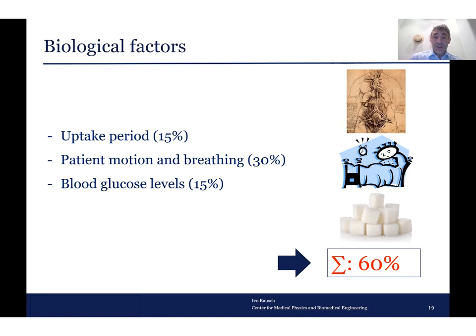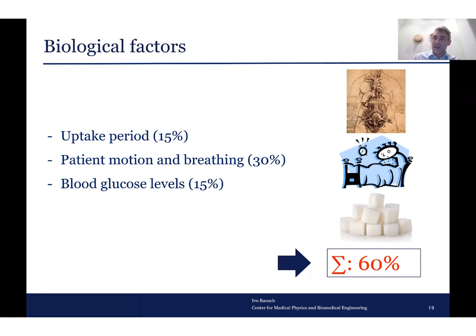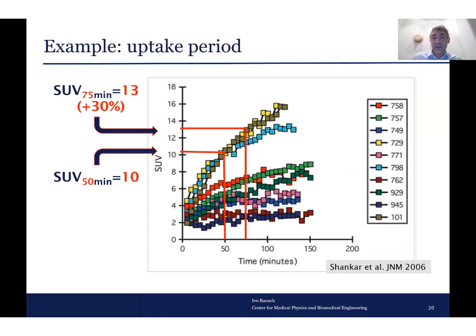Biological factors include the uptake period — the time between injection and measurement — patient motion and breathing, and blood glucose level for FDG. If the patient moves during PET acquisition, it is like smearing the activity over a bigger area, meaning concentration goes down and SUV goes down even though the uptake would be higher. If a patient has a high blood glucose level, their cells may be saturated with glucose and will not take up much more, so FDG will not go as nicely into tumors, which can change the SUV readings.